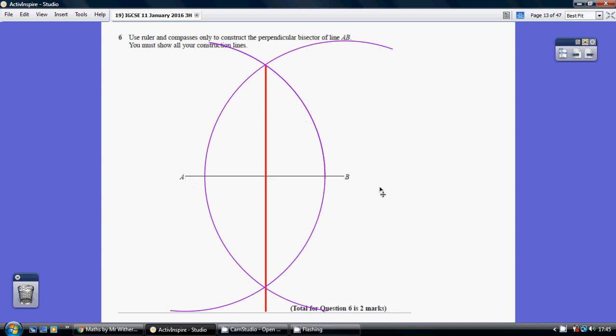You then just repeat the process, putting the pin at B, not changing the width of the compass, to give us a second arc.